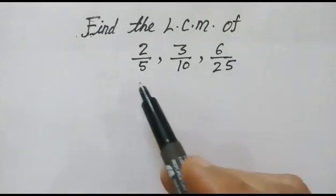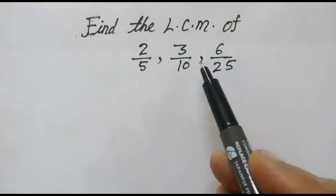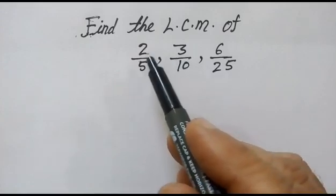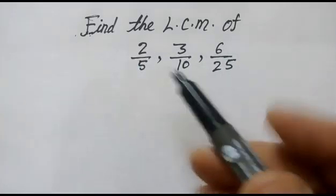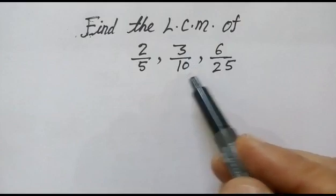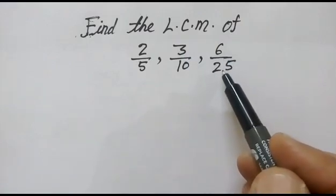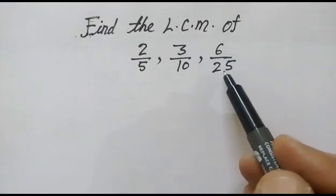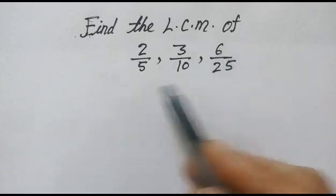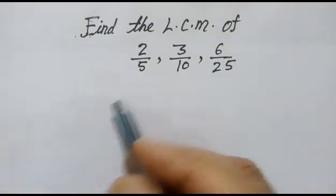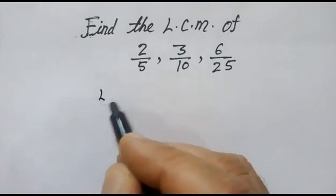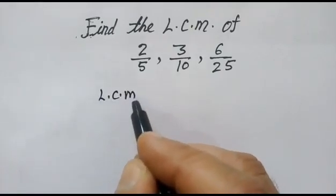Hi friends, in this problem we have to find out the LCM of these fractions: 2/5, 3/10, and 6/25. How do we find the LCM of these fractions? First, we will find the LCM of the numerators.